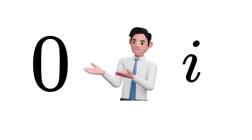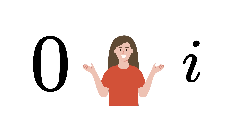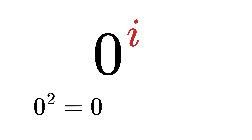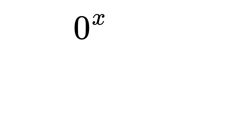Then I have 0. I take both these fascinating numbers and form the expression 0 raised to i. We might think that if we raise 0 to any value, we will get 0, just like how 0 raised to 2 is 0, or 0 raised to 10 is 0. So we come to the conclusion that 0 raised to any power x equals 0.